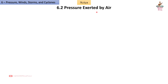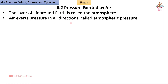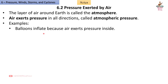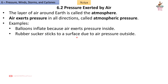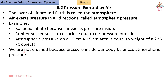6.2 Pressure exerted by air. The layer of air around Earth is called the atmosphere. Air exerts pressure in all directions, called atmospheric pressure. Examples: Balloons inflate because air exerts pressure inside. A rubber sucker sticks to a surface due to air pressure outside. Atmospheric pressure on a 15 cm × 15 cm area is equal to the weight of a 225 kg object.